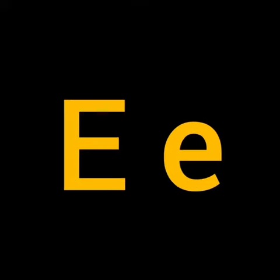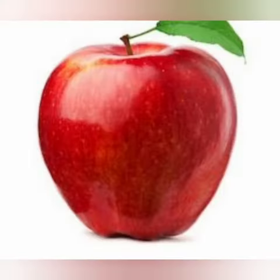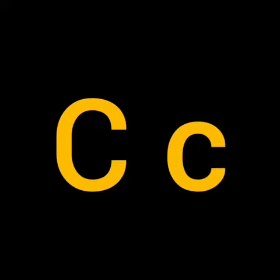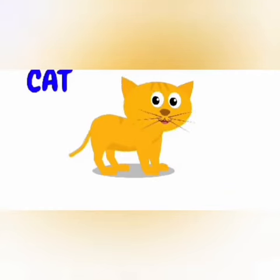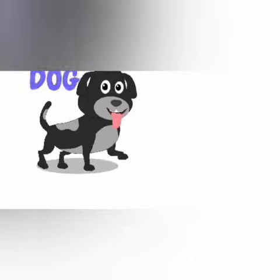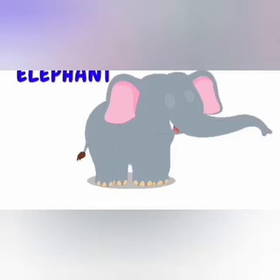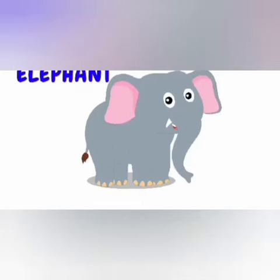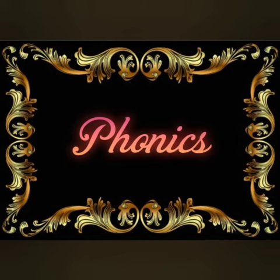Let us revise that once again. A, A, Apple. The sound of letter B is 'b'. B, B, Ball. The sound of letter C is 'k'. C, k, Cat. The sound of letter D is 'd'. D, D, Dog. The sound of letter E is 'a'. E, a, Elephant.